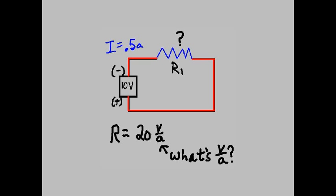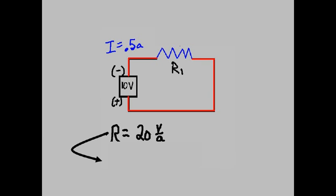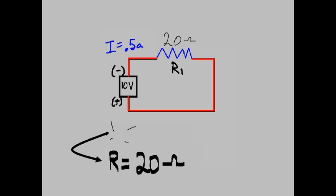V over A? What's V over A? V over A is defined as ohms. R equals 20 volts over amps becomes R equals 20 ohms.